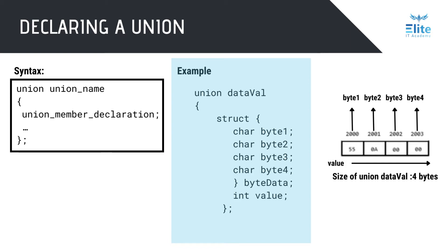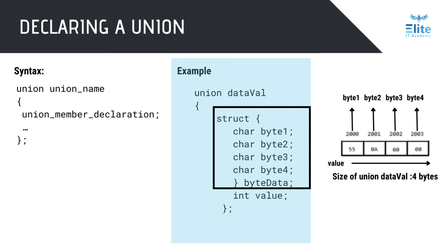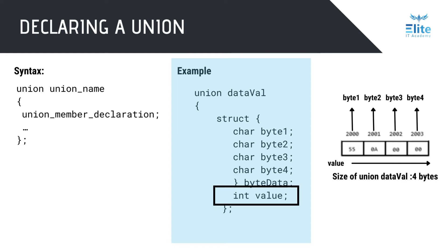As shown here, the union declaration is very similar to that of a structure. The union DataVal has two members. The first member is a structure called byte data — this structure does not have a structure tag, which is allowed if you are declaring variables in the structure type declaration itself. Since this is an anonymous structure, you cannot declare more variables or references to it later. The two members of the union — structure byte data and the int value — share the same area of memory, and since both are four bytes wide, the union is allocated four bytes.